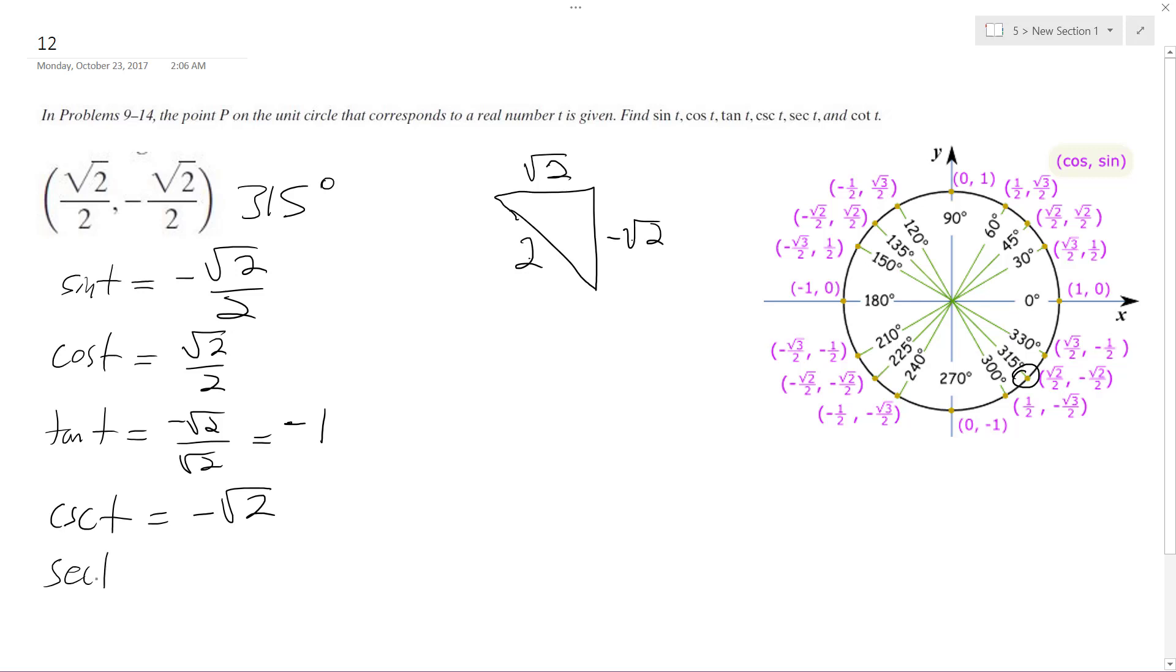So secant t is going to be equal to negative root 2, and then cotangent of t is going to be equal to negative 1 again.